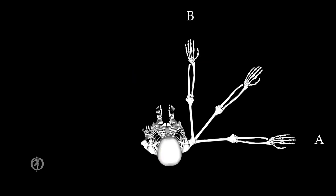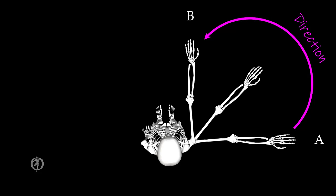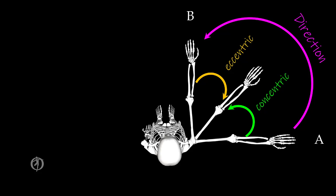Now let's return to our horizontal adduction example. In this case, the arm is moving from position A to position B, so the direction of travel here is going to be a counterclockwise movement. When the movement was sufficiently slow, we said that this movement was being controlled concentrically by the horizontal adductors. But now we're going to move fast. And just like with the cup, when we are moving fast, initially the arm is going to end up speeding up. But then if I'm going to stop at zero velocity at the end of the movement, the arm is going to have to slow down.